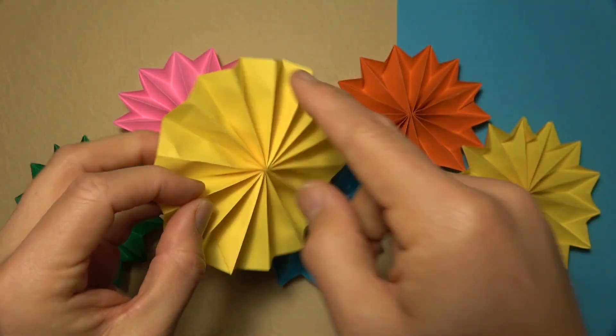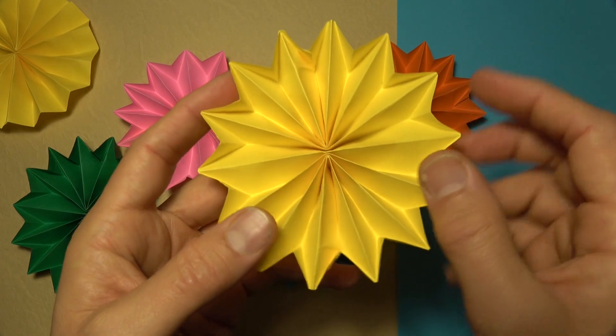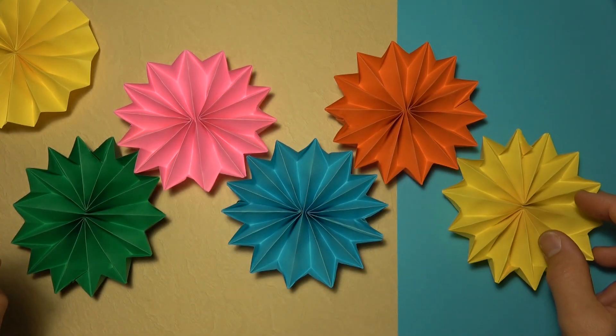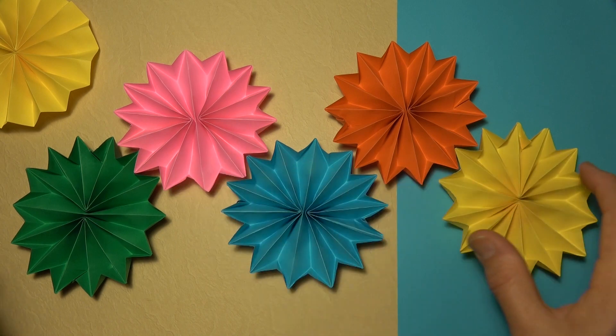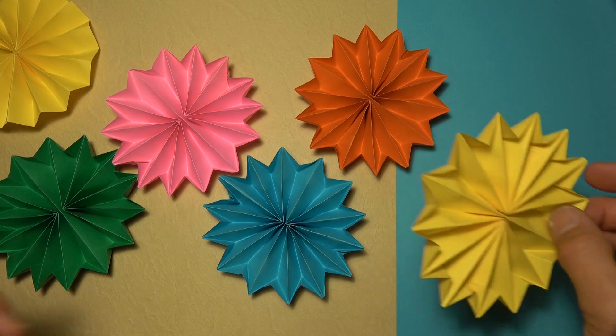And then I'm going to show you how to make reverse folds around the circle so you end up with a 14 point star rosette. And if you fold several of them, you can put them together in this zigzag pattern and they spin like gears. Isn't that cool? Want to learn how to fold it?